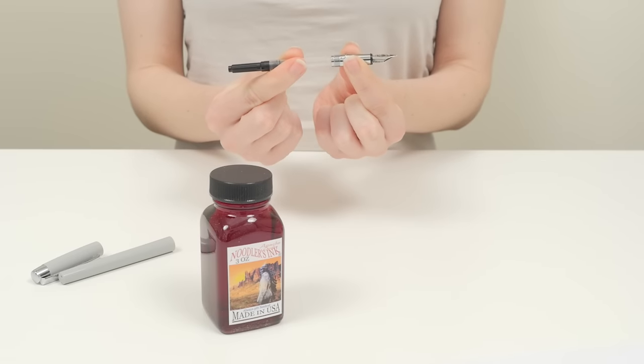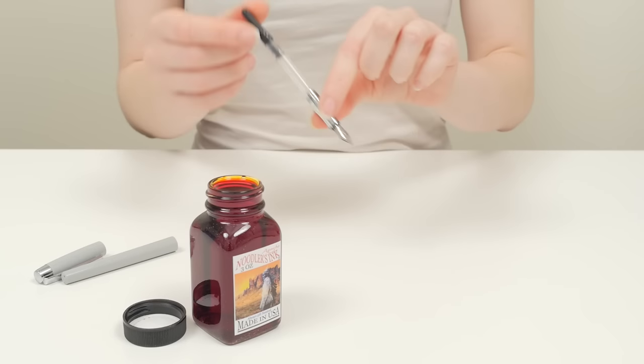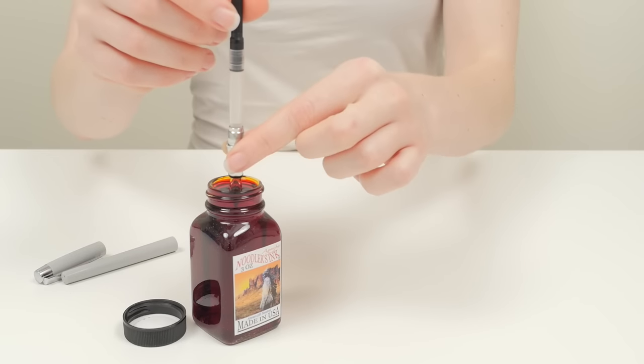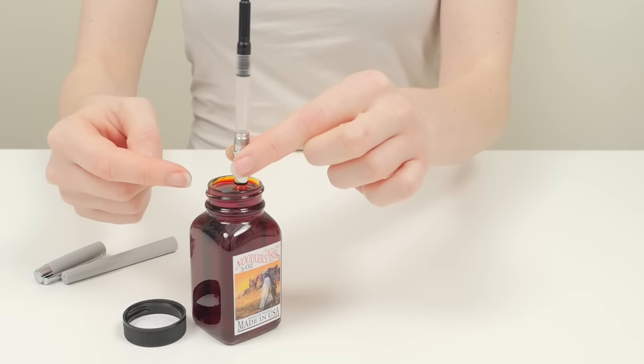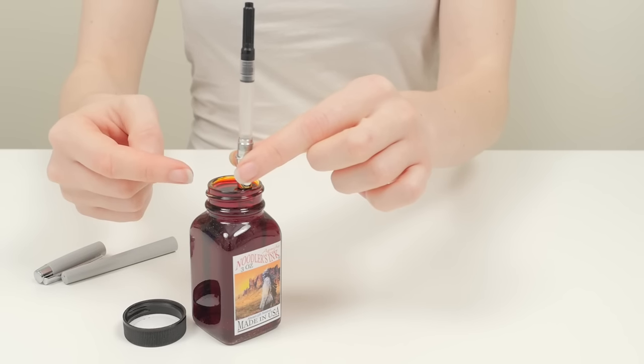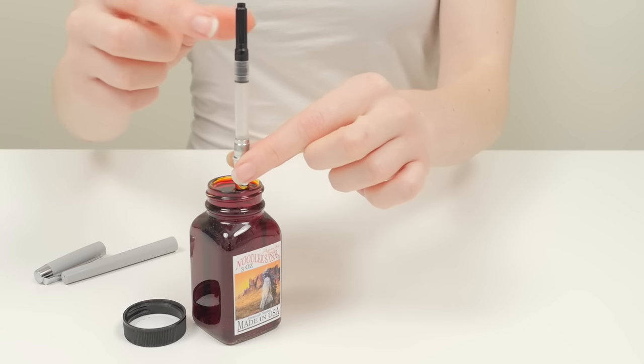Next, dip the nib into the bottled ink. Make sure the entire nib is submerged in the ink so that the edge of the grip section is also touching the ink.